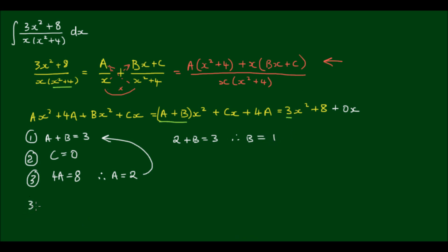Now 3x² + 8 divided by x(x² + 4) can be expressed as 2 divided by x plus x divided by (x² + 4). So integrating both sides,